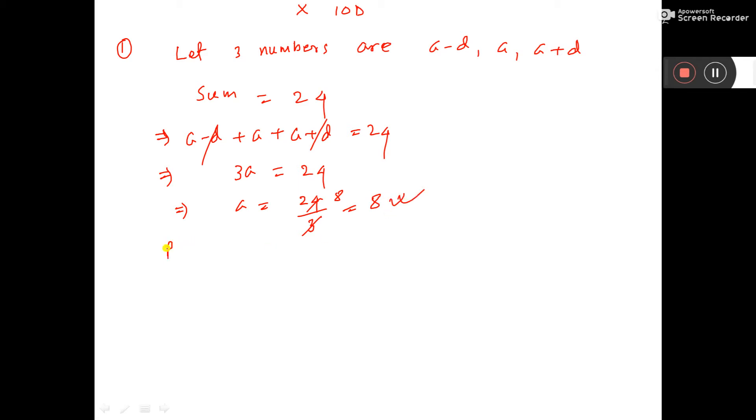So we have the value of A. Now the product is 440. Product means (A minus D) times A times (A plus D) equals 440. The value of A is 8, so (8 minus D) times 8 times (8 plus D) equals 440.